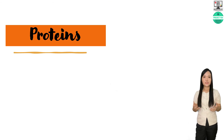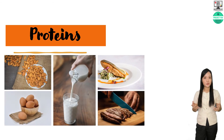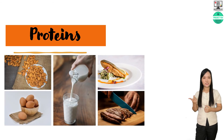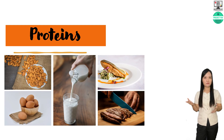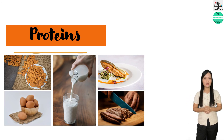Some of the sources of proteins are meat, fish, eggs, dairy products, some types of beans, and almond nuts.